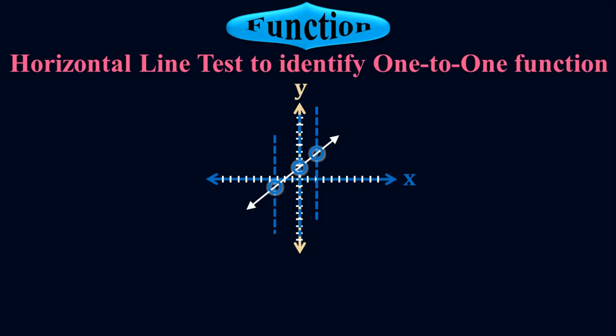Why do I need the vertical line test? Because the very first thing is to know whether it is a perfect function or not. If it is not a function, there is no need to apply the horizontal line test. We identified that it is a perfect function because it satisfies the vertical line test.